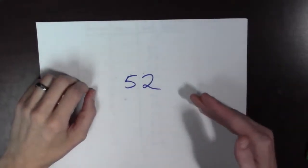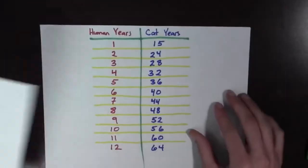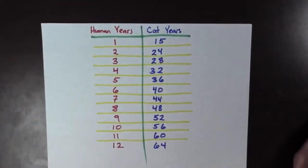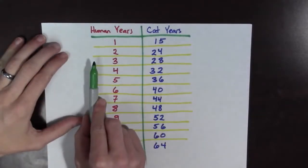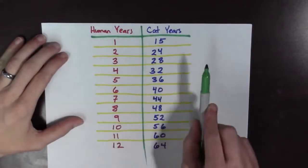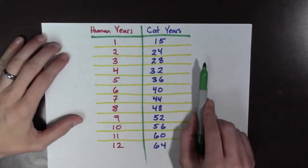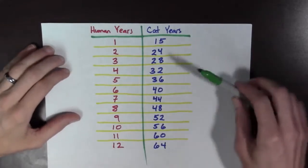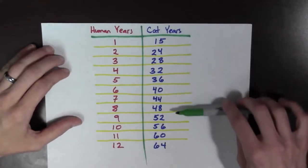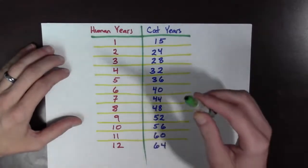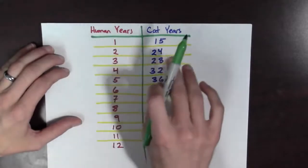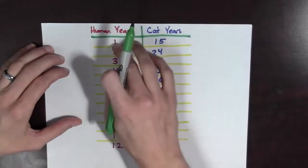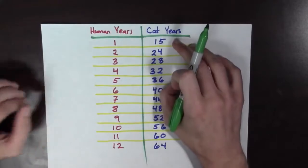We could repeat this process again and again, and we would get this table. And again, on the left, we have the domain, or the inputs, and on the right, we have the range, or the outputs. And this is what our function does. Our function is a mapping between human years and cat years, so that for every input, there's a single output.